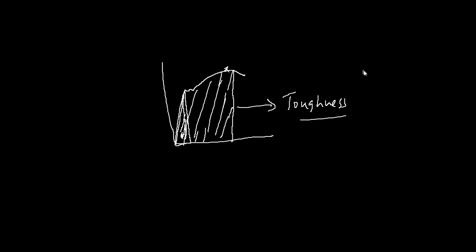To summarize: modulus of resilience is the ability of the material to absorb energy up to the elastic limit, while toughness is the ability of the material to absorb energy up to fracture. The bigger the area of the stress-strain diagram, the tougher the material.